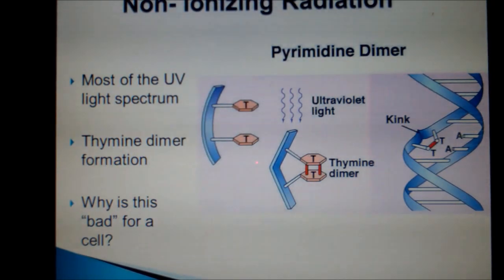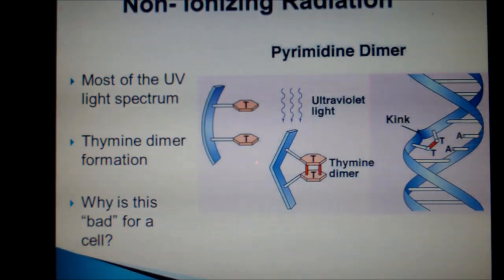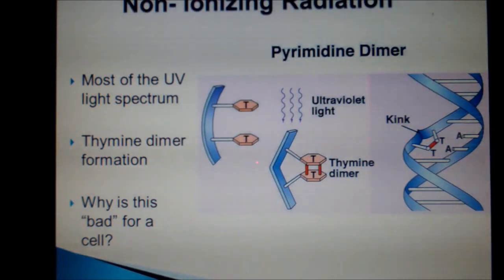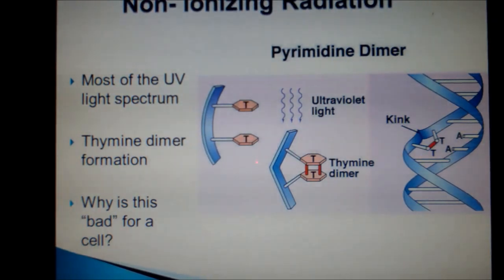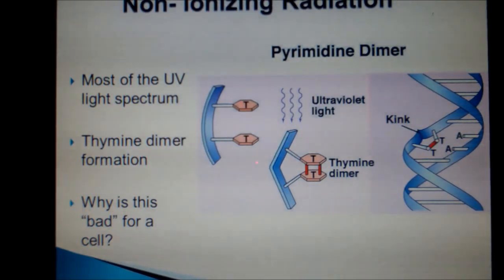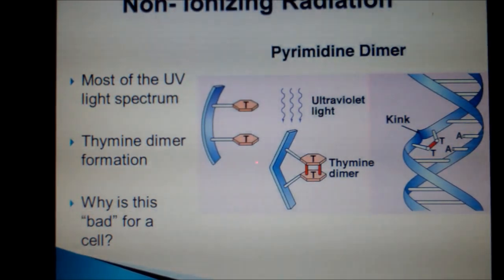One interesting known mechanism for cellular damage is overexposure to the sun. UV-A rays cause the formation of a thymine dimer, which causes a kink in the DNA strand — why would this be bad for a cell? Please read more about it at the link provided on your transcript. Incidentally, these same rays that cause this damage from the sun are found in tanning beds. The general rule is that there is no such thing as a safe tan.